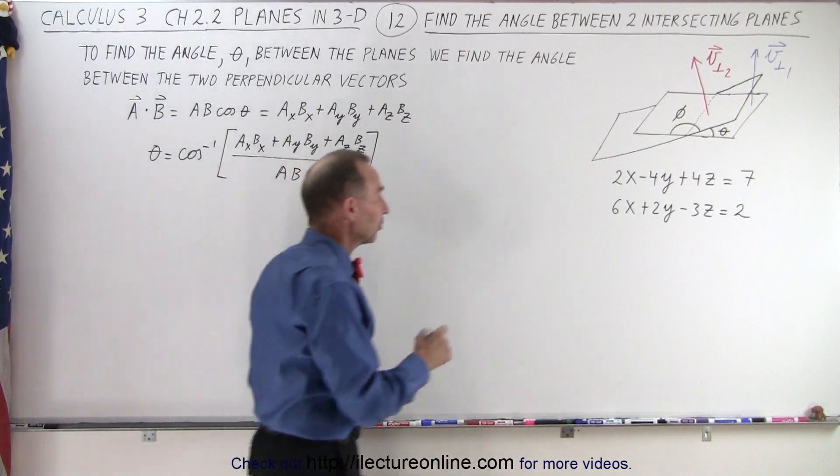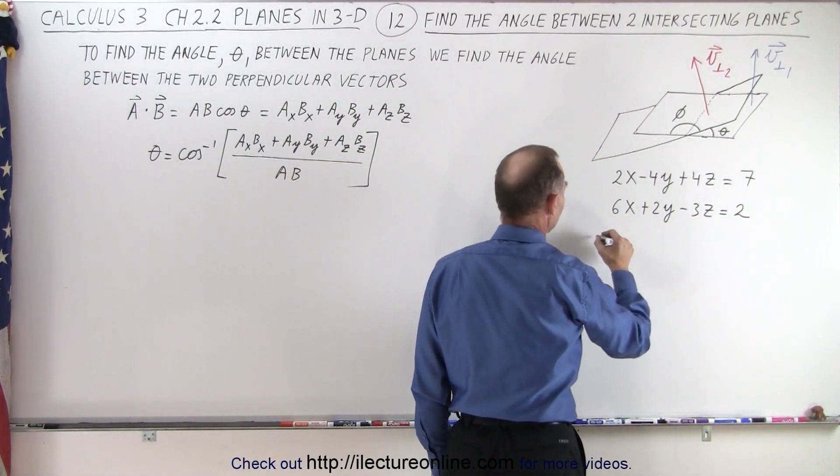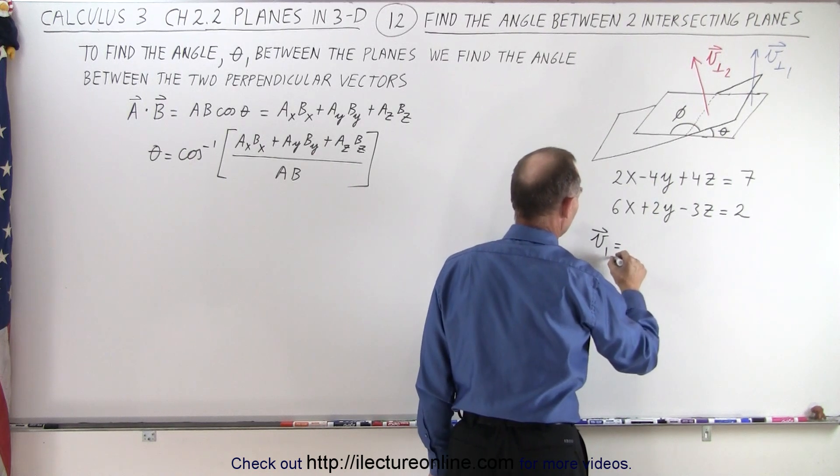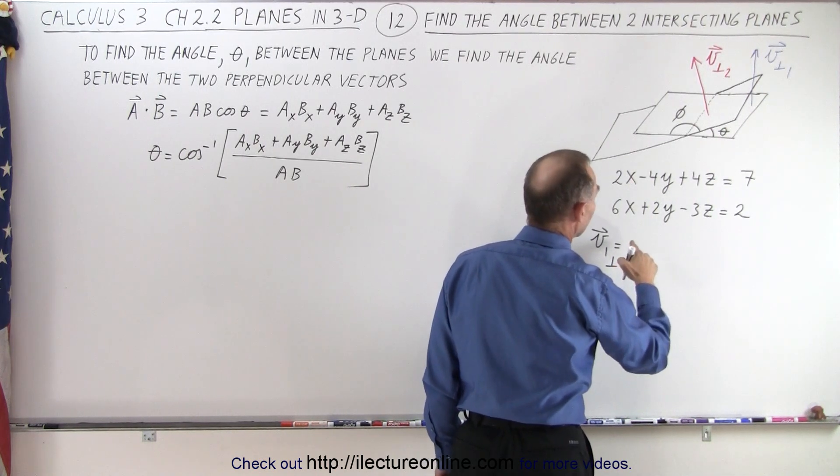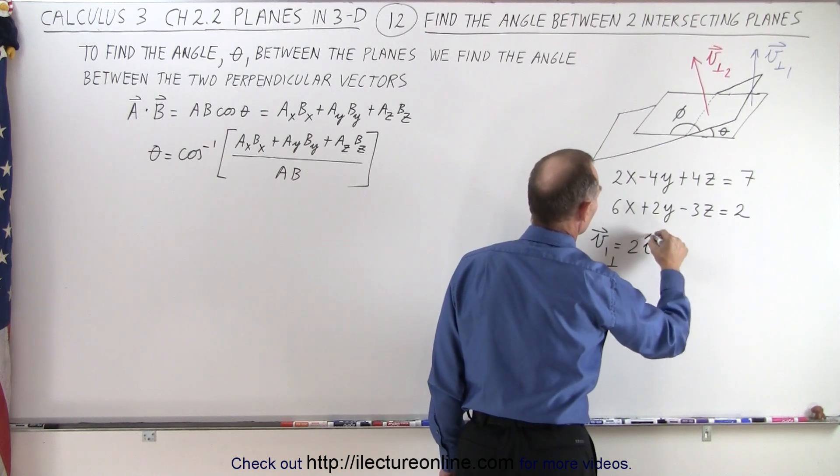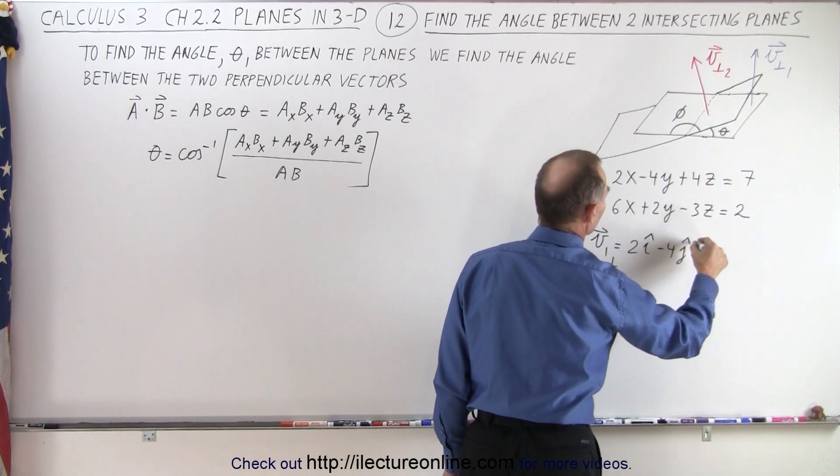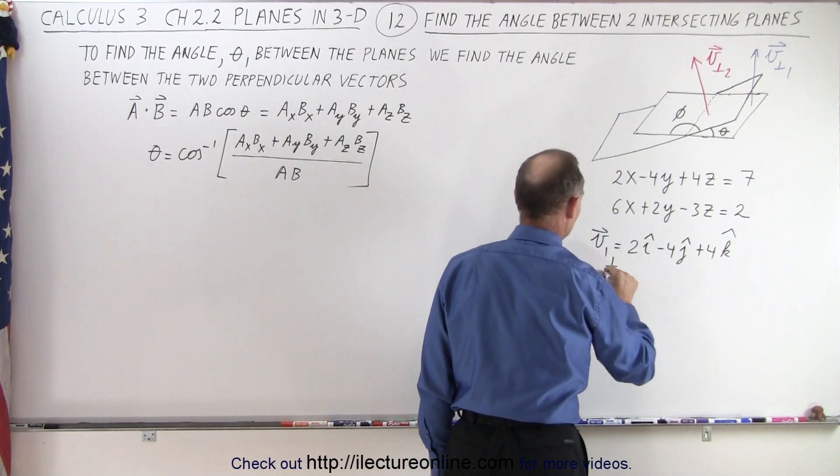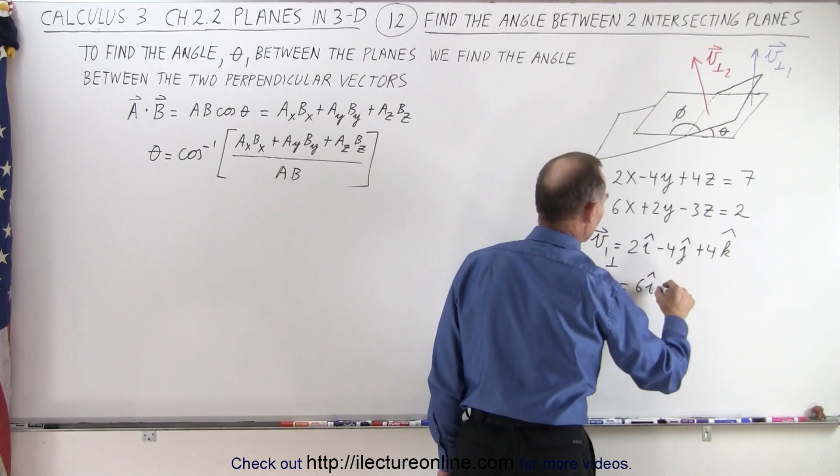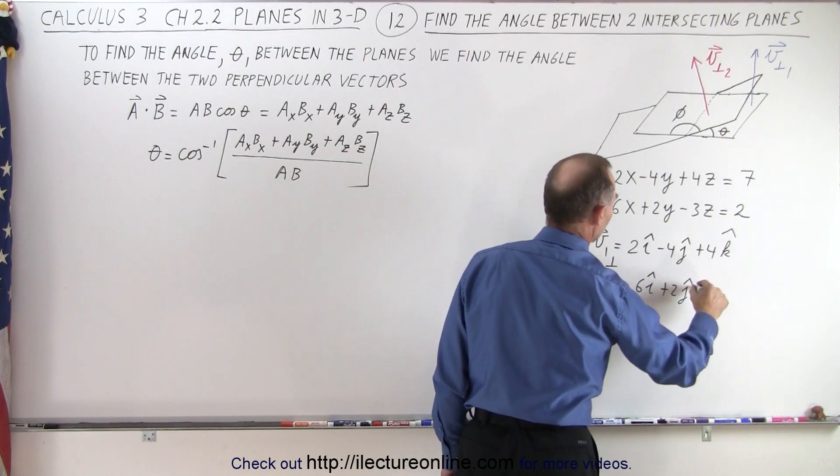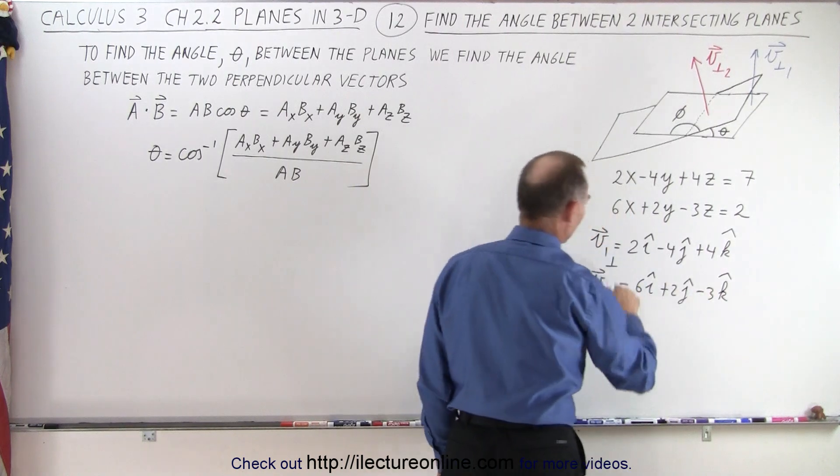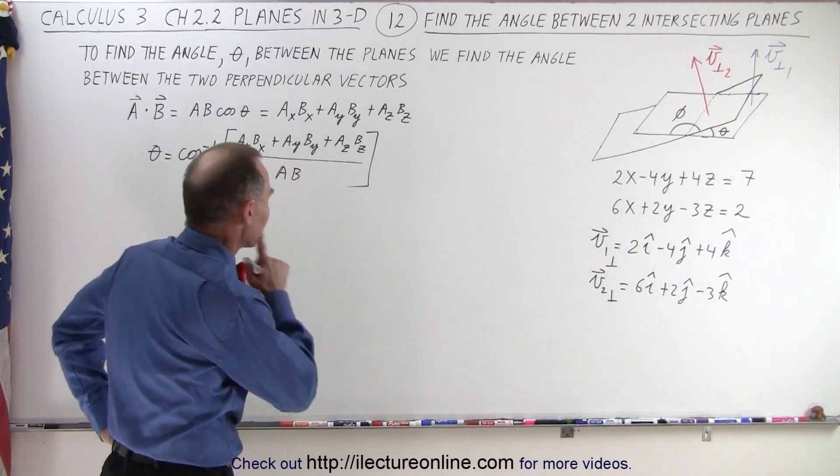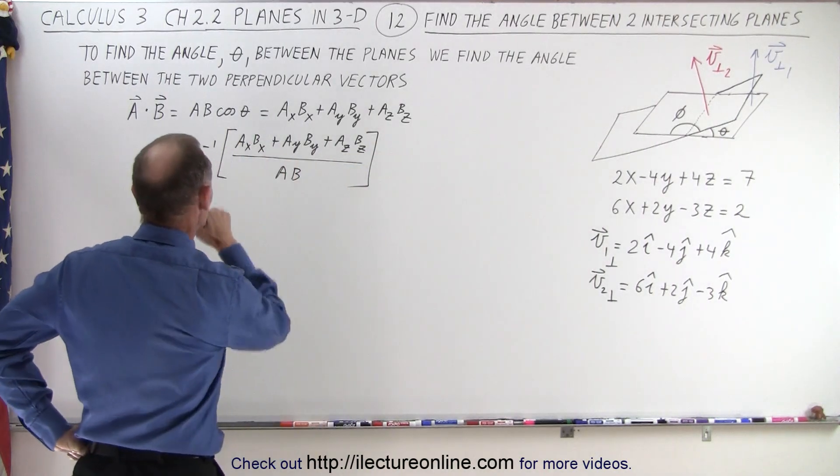So we're going to employ the same technique. First, of course, we need to find the two vectors. We can say that vector 1 perpendicular is going to be equal to 2 in the i direction, minus 4 in the j direction, plus 4 in the k direction. And vector 2 perpendicular is going to be equal to 6 in the i direction, plus 2 in the j direction, minus 3 in the k direction. I know that I switched the subscripts around, but we know we're talking about the same vectors.